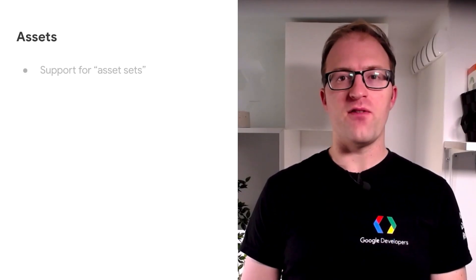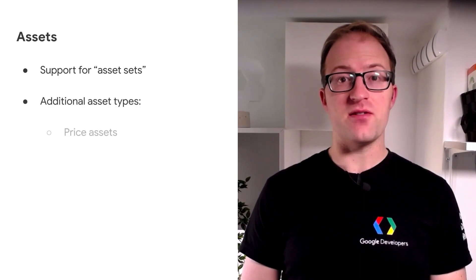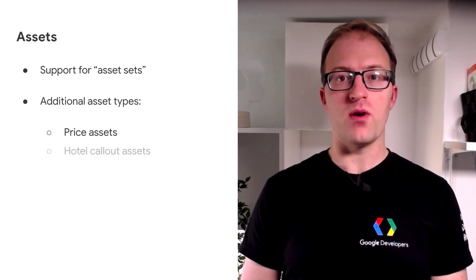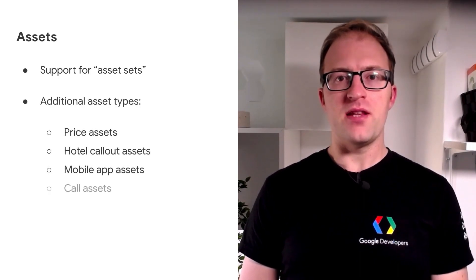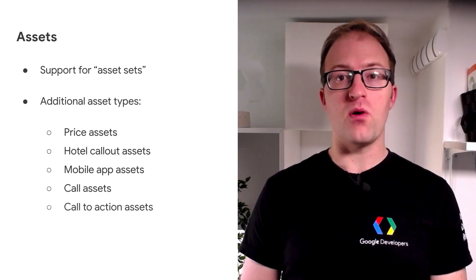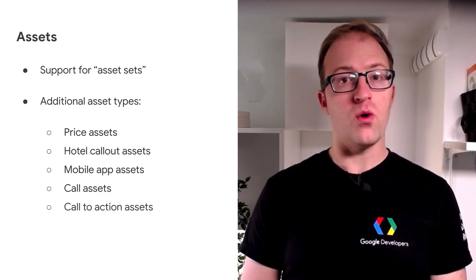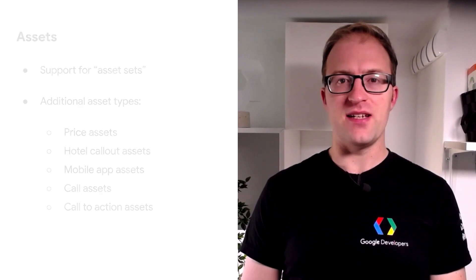We've been busy preparing Google Ads API for the support of more asset types in the future, so in version 9 we've added support for asset sets — a collection of assets that will eventually replace the feed service. We are also adding the following additional asset types scheduled to be available in all accounts in the future: price assets, hotel callout assets, mobile app assets, call assets, and call to action assets.